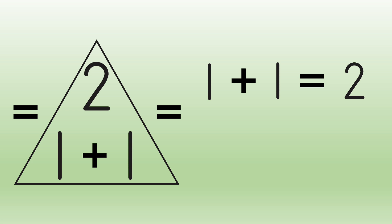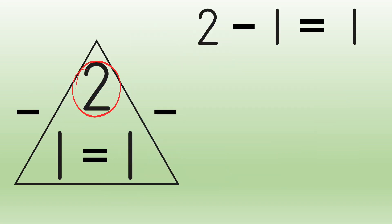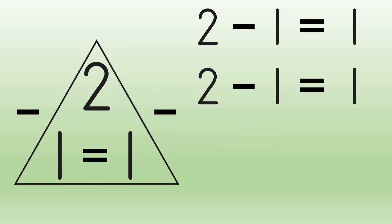Now he tried subtraction. Start at the top, go down and over: two minus one equals one. And go down the other way: two minus one equals one. Again, Percival saw that our two facts were the same, so he only listed it once.